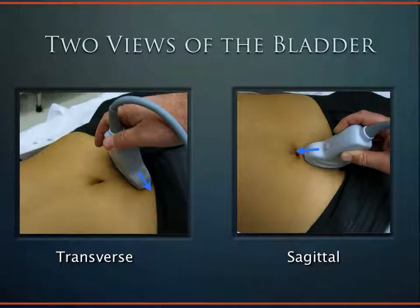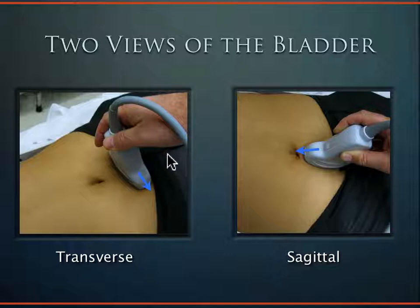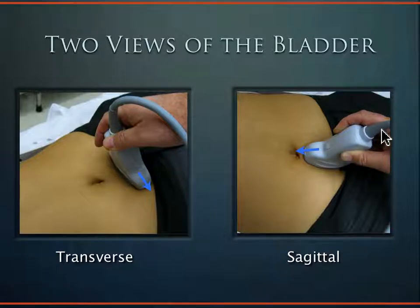There are two views of the bladder: the transverse view with indicator to the patient's right, and the sagittal view with indicator to the patient's head. The probe sits just below the umbilicus, but the bladder is actually farther down. Since patients aren't fully undressed, we end up placing the probe a little higher, so we compensate by tilting the probe inferiorly — sending sound down toward where the bladder actually is, all the way down by the pubic symphysis. The same applies in the sagittal view: rotate the cable to shine sound inferiorly.